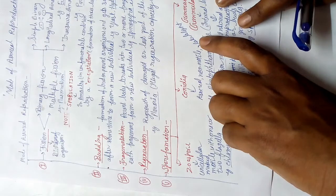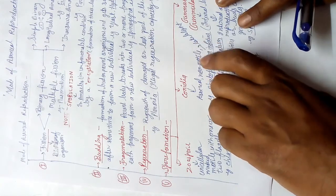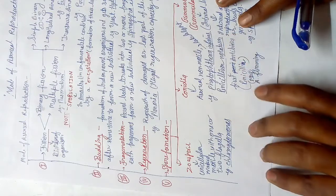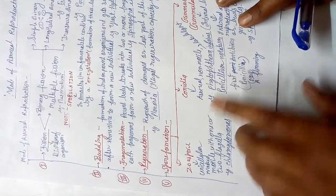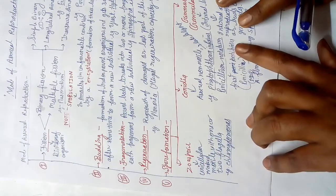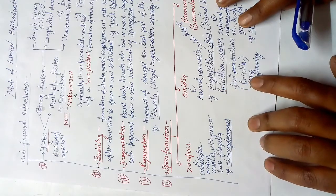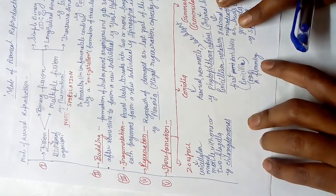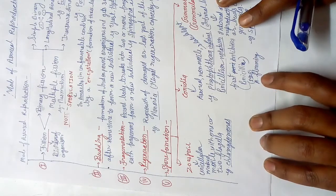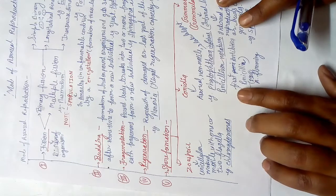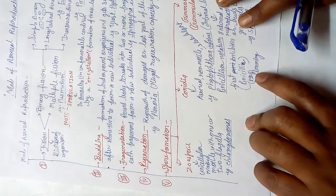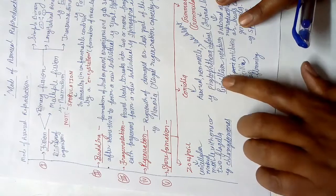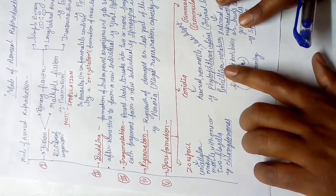Another example is Penicillium notatum. The antibiotic produced by this fungus is known as penicillin, discovered in 1928 by Alexander Fleming at Saint Mary's Hospital in London. Penicillium does not cause any disease in human beings.